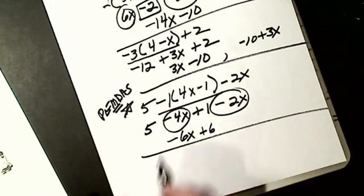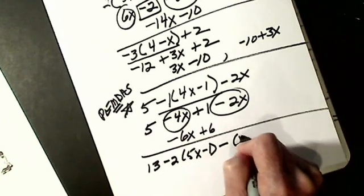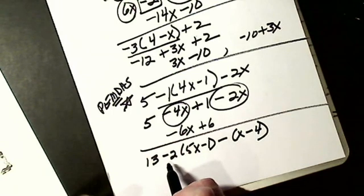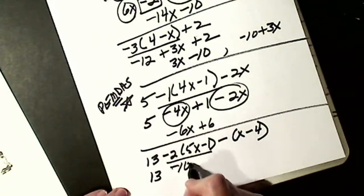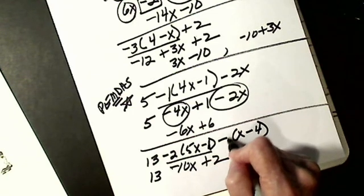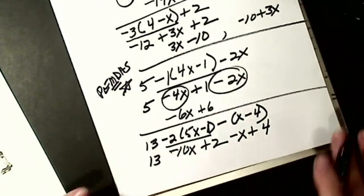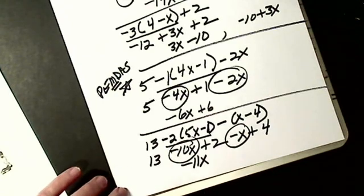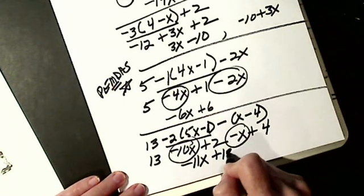One big final example: 13 minus 2 times (5x minus 1) minus (x minus 4). Distributive property comes first — do all of it. The 13 stays. Negative 2 times 5x is minus 10x; like signs are plus so negative 2 times negative 1 is positive 2. The second parenthesis has a 1 in front, so: minus 1 times x is minus x; minus 1 times negative 4 is positive 4. Now combine like terms: negative 10x minus x gives negative 11x. Numbers: 13 plus 2 is 15, plus 4 is 19. Final answer: negative 11x plus 19.